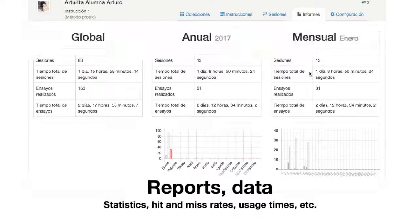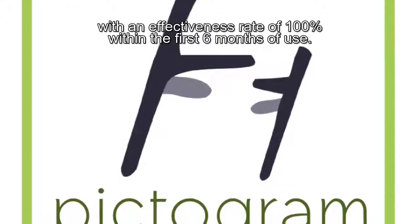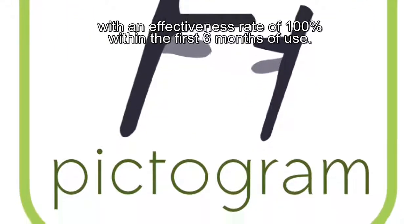PictogramWeb is the first collaborative educational platform where students work actively with a supportive community of their family members, teachers, and therapists, with an effectiveness rate of 100% within the first six months of use.